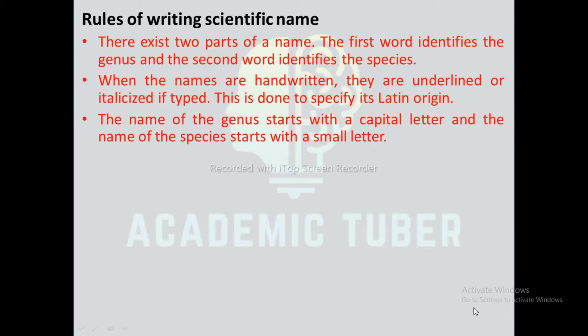Rules of writing a scientific name: There exist two parts of a name. The first word identifies the genus and the second word identifies the species. When the names are handwritten, they are underlined, or italicized if typed. This is done to specify its Latin origin. The name of the genus starts with a capital letter and the name of the species starts with a small letter.